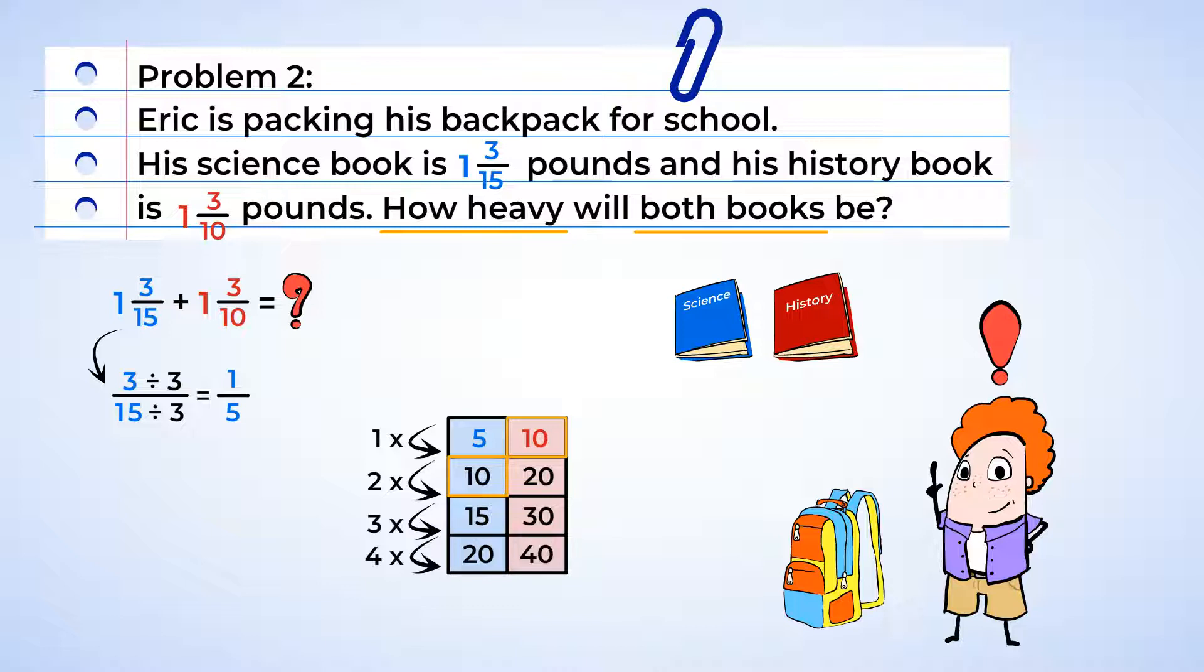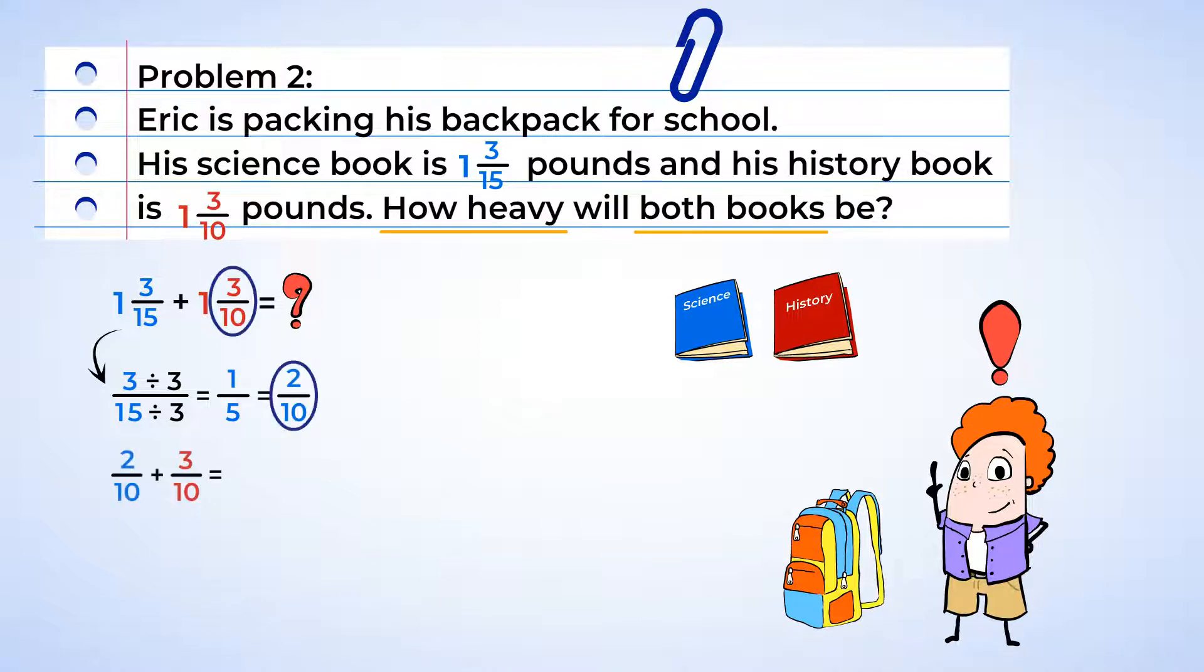Now we need to multiply by 2, the numerator and denominator of the fraction 1/5, to get to a denominator of 10, and that makes 2/10. And now it's time to add. 2 plus 3 is 5. We have a fraction of 5/10, which we can further simplify by dividing both the denominator and numerator by 5, and this equals ½.